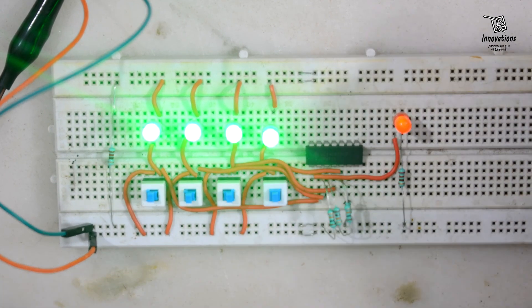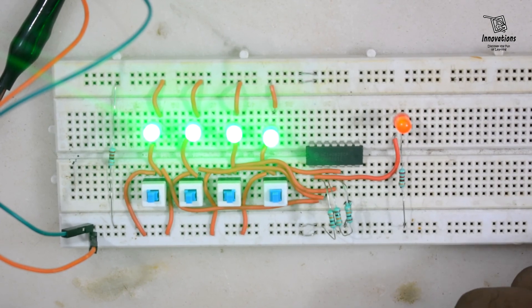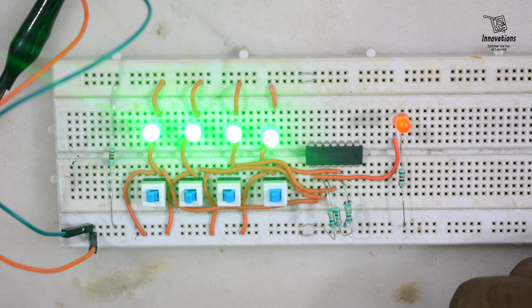So this much for today. In our next video we will show 7421 IC, that is 74HC21, which is also a 4 input AND gate and we will show how that works.